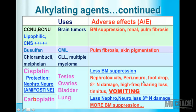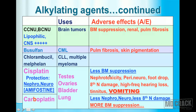Cisplatin is less bone marrow toxic but causes more nephrotoxicity and neurotoxicity. Additionally, cisplatin is a potent agent that produces severe vomiting — it is the most important anti-cancer drug for causing vomiting. Carboplatin, with more bone marrow suppression, has comparatively less nephrotoxicity, less neurotoxicity, and less eighth nerve (vestibular-cochlear) damage. Amifostine provides protection against cisplatin's nephrotoxicity and neurotoxicity.